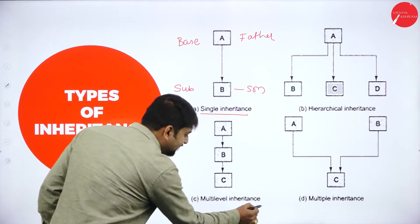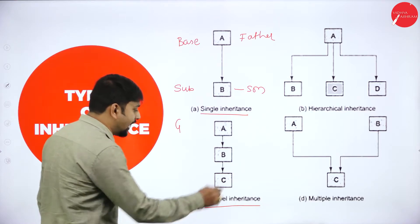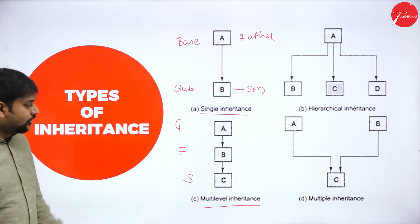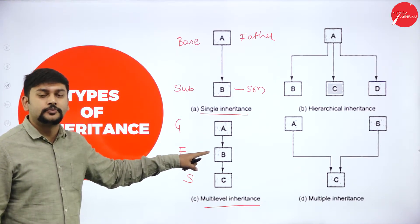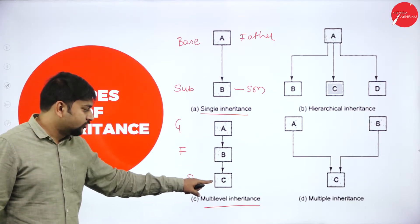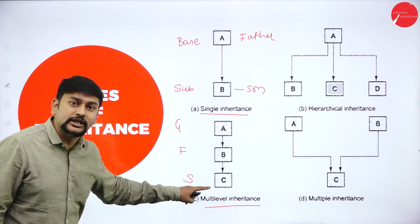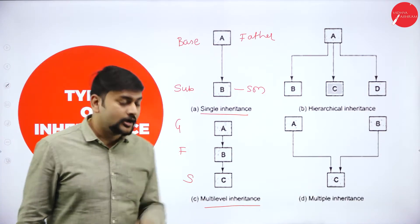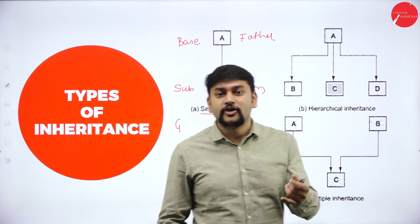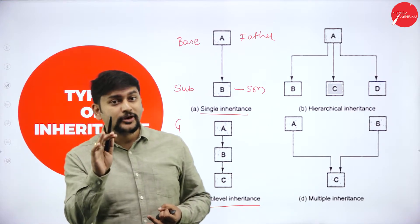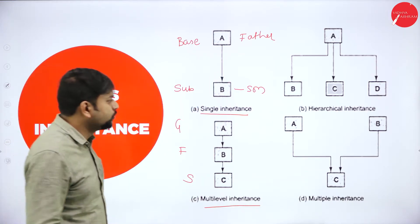Multi-level inheritance involves multiple levels: first the grandfather (A), then the father (B), then the son (C). B is a subclass of A, and C is a subclass of B. The grandson C can inherit properties from both the father B as well as the grandfather A, but B can only inherit from its direct parent A.